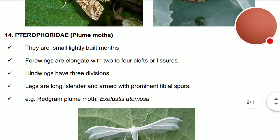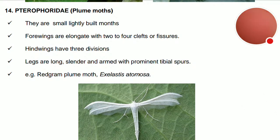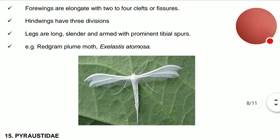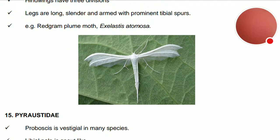Pterophoridae — the plume moths. They are small, lightly built moths. The forewings are elongate with two to four clefts at the margins. The hind wings have three divisions. The legs are long, slender, and armed with prominent tibial spurs. Example: Axelastis automosa — the tur/red gram plume moth.